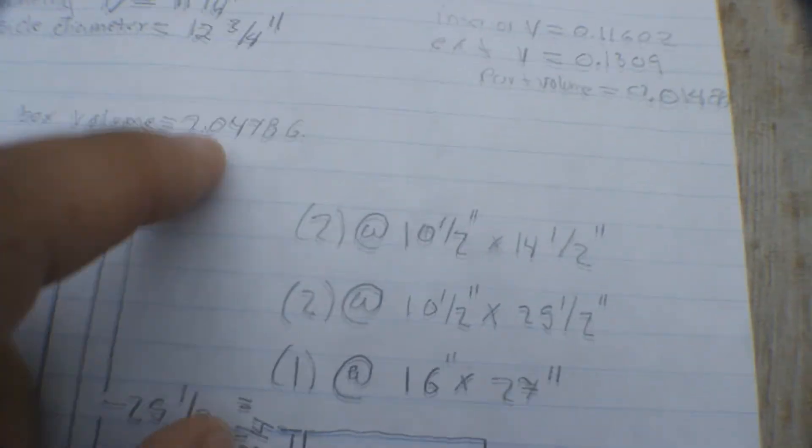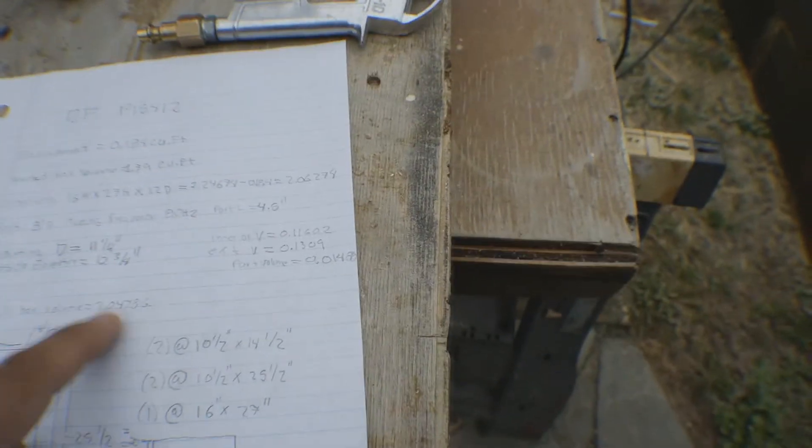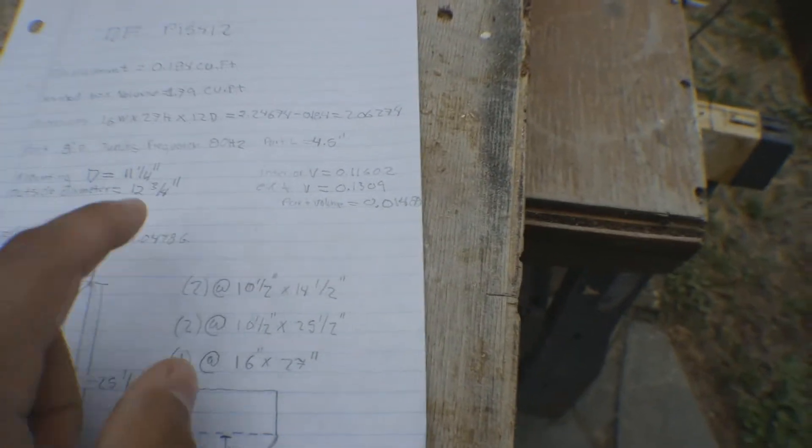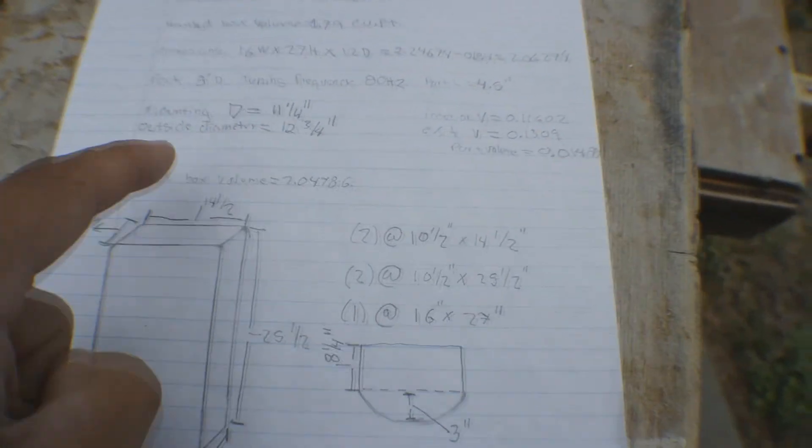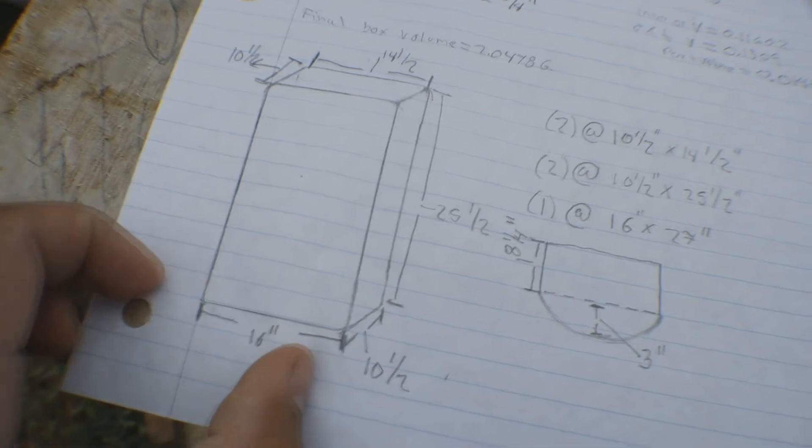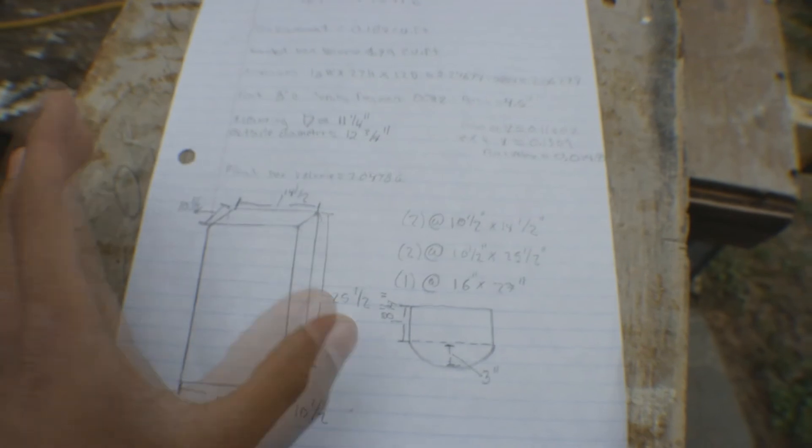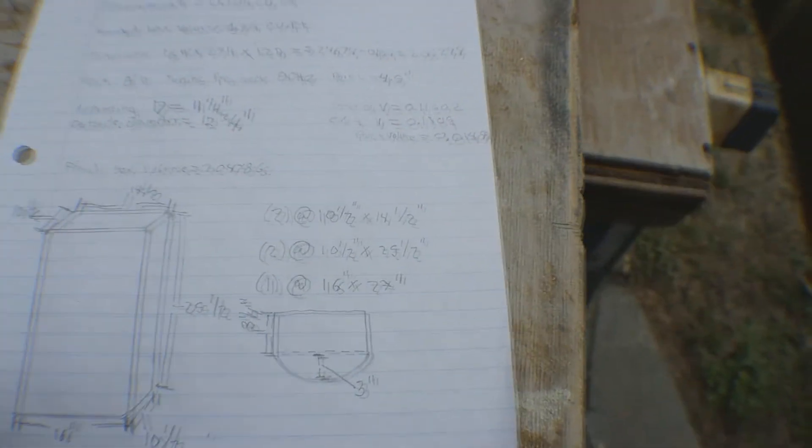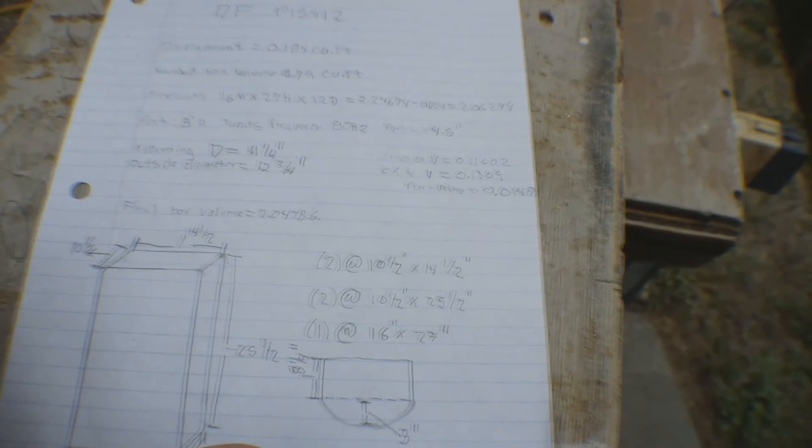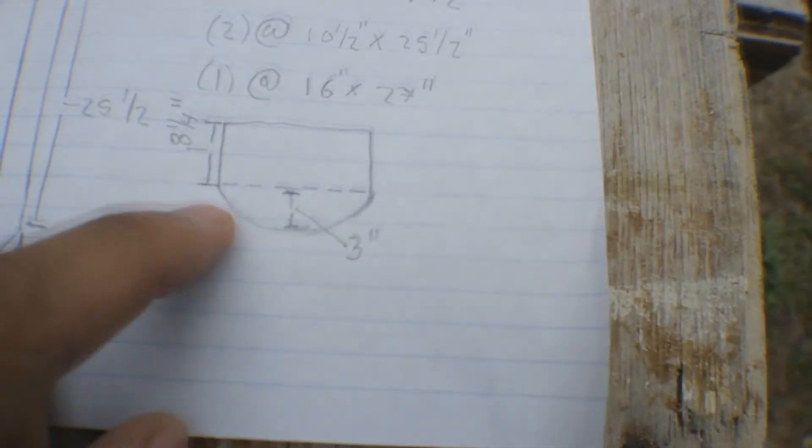So our final volume will be 2.04786. Now that's going to change a little bit, it's probably going to decrease roughly to the two cubic feet mark I'm aiming for. Reason being is that I will fiberglass the front piece of the box, so I'm gonna give it a little contour. I'm gonna kick out the sub ring and feather it out, so it's gonna decrease the volume by a little bit.